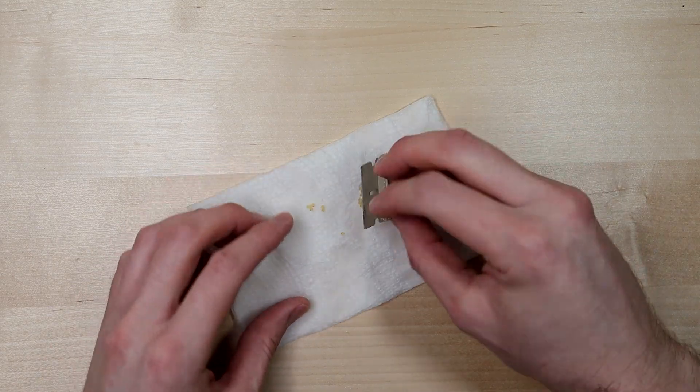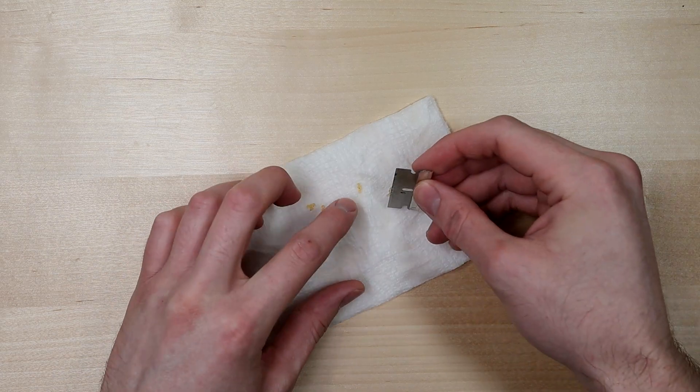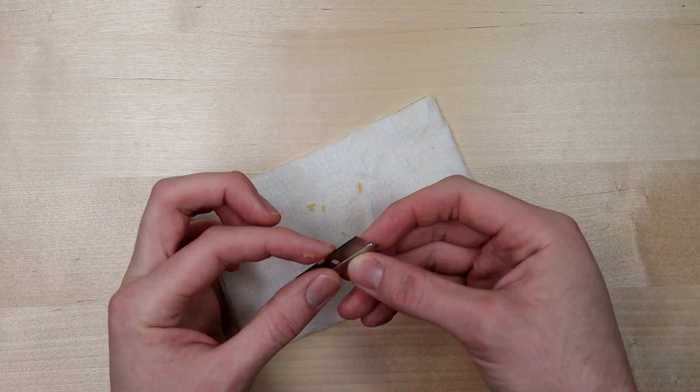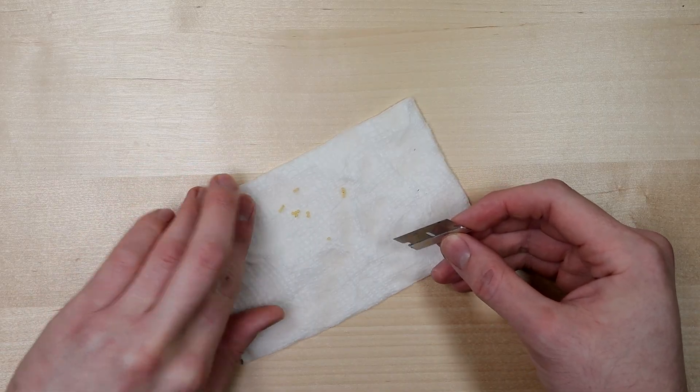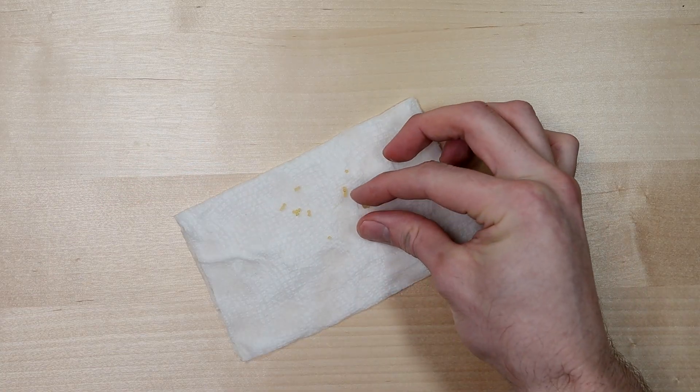I took those eggs and transferred them to a folded paper towel that I had saturated with clean, dechlorinated water. I purposely did not use tank water. I'm sure the eggs have plenty of contaminants on them, but I figured, why risk more by using tank water?